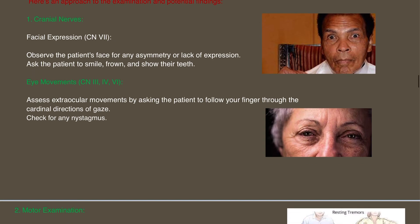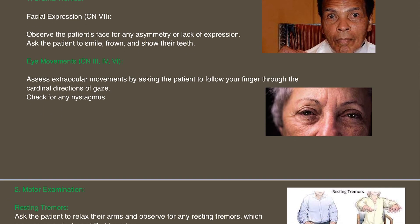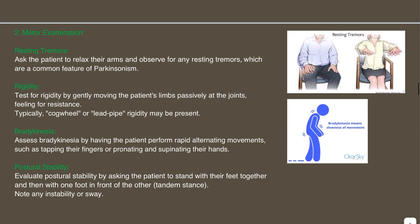Then we're going to do the eye movements, looking at the third, fourth, and sixth cranial nerves. Assess extraocular movements by asking the patient to follow your fingers through the cardinal directions of gaze and check for any nystagmus. Then move on to motor examination — check for resting tremors. Ask the patient to relax their arms and observe for any resting tremors, which are a common feature of Parkinsonism. We can also ask the patient to outstretch the hand and observe resting tremors there as well.